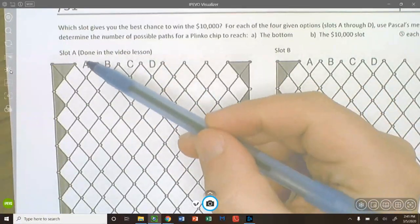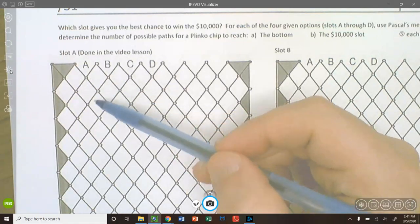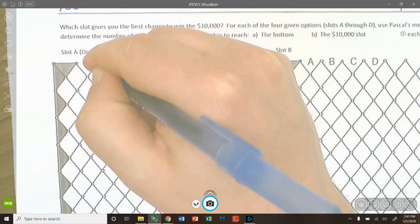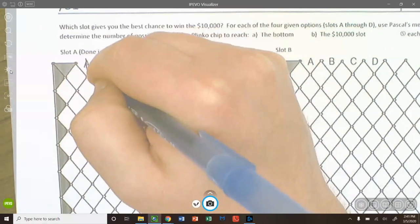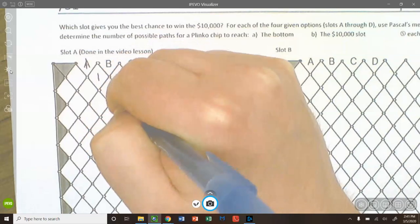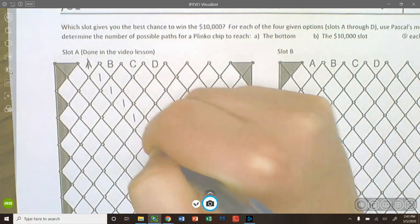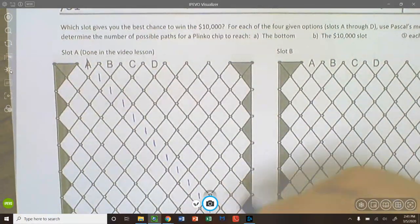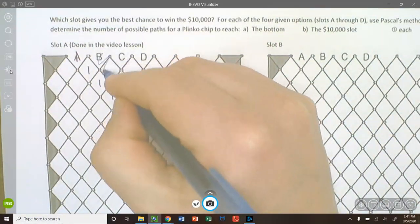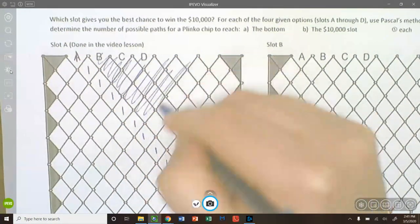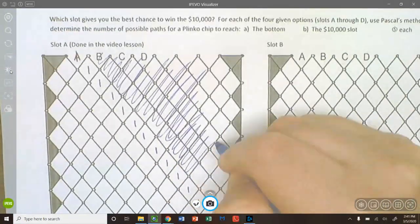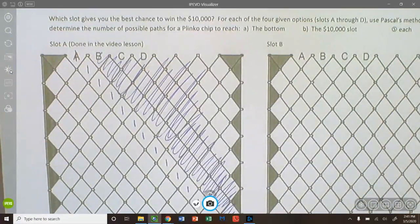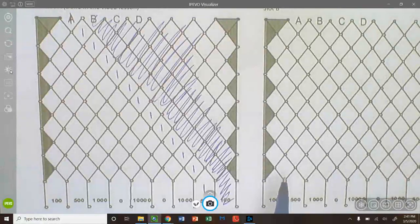So we have here is a replica Plinko board. This is the same setup, the same dollar values at the bottom, the same seven slots you can drop from at the top. And in this example I'm going to help you guys analyze dropping a Plinko chip from slot A. So a couple things to notice. If you drop from slot A and the Plinko chip can only bounce left and right, then if you put a one at slot A and you apply Pascal's method,